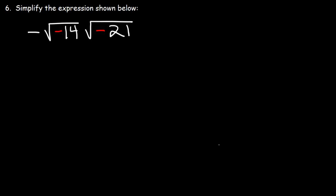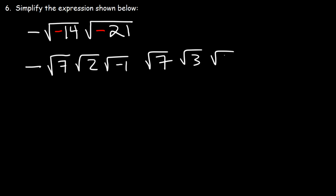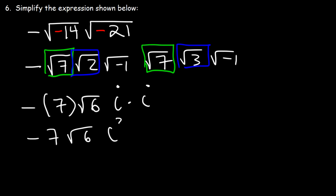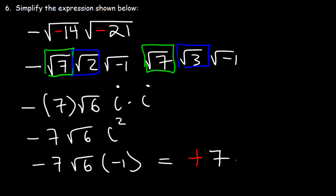Number 6: simplify the expression shown below. We can break up square root of negative 14 as root 7, root 2, and root of negative 1. Similarly, 7 times 3 times negative 1 is negative 21. Now we combine the square root of 7 times the square root of 7; that's the square root of 49, which equals positive 7. The square root of 2 times the square root of 3 equals the square root of 6. The square root of negative 1 is i, and we have two of them, so i times i is i squared, which equals negative 1. Negative 7 times negative 1 is positive 7, so the final answer is positive 7 root 6.